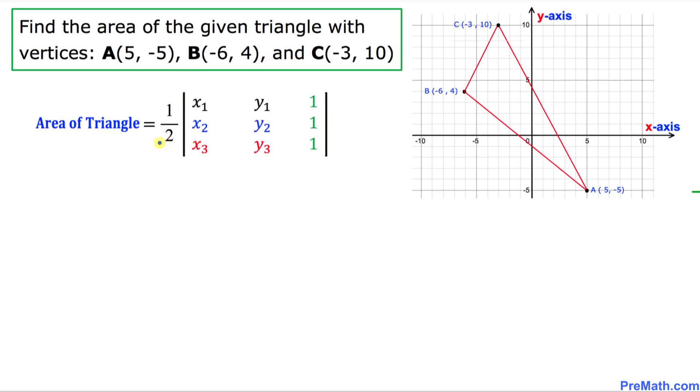And here is the formula that we'll be using to find the area of this triangle, which is 1 over 2 times this whole box. And by the way, this box is called the determinant of a 3 by 3 matrix. Once again, this is called the determinant.